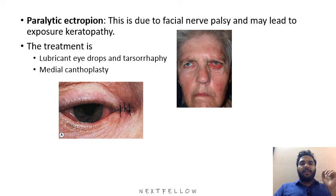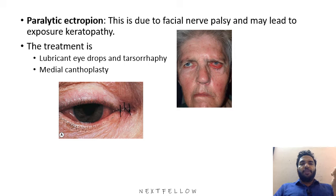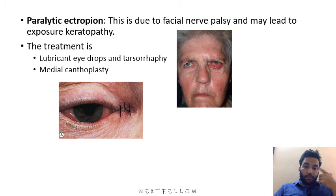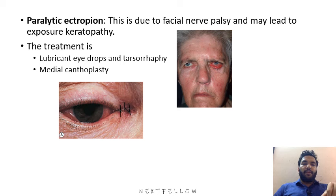Paralytic ectropion is basically due to facial nerve palsy, which may lead to exposure keratopathy. Treatment involves lubricant eye drops, and tarsorrhaphy where we suture the eyelids. Medial canthaloplasty can also be done for this ectropion condition.